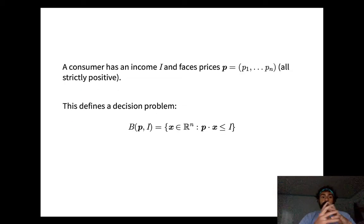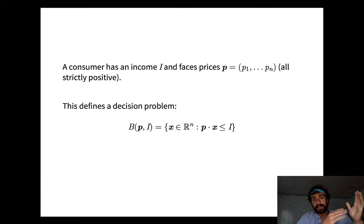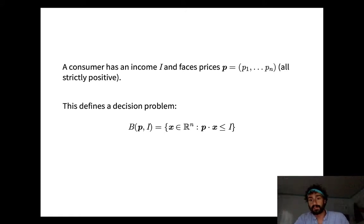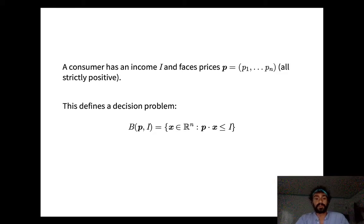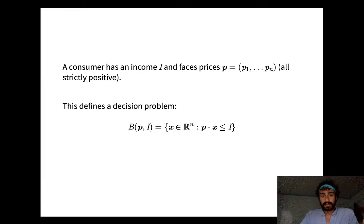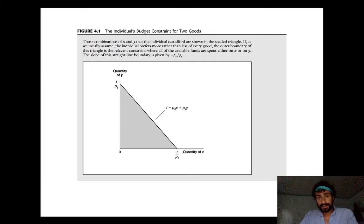Notationally, a consumer has an income I — a real number representing the amount of money — and faces prices p, a vector in R^n with one price per good. In R^3 with three fruits, p1 is the price of apples, p2 the price of bananas, and p3 the price of cherries. This defines a decision problem represented by the budget set B(p, I): all vectors in R^n_+ such that the sum of price times quantity across all goods is less than or equal to income.